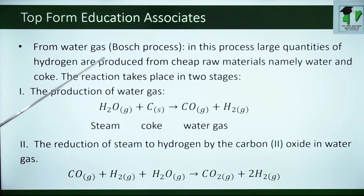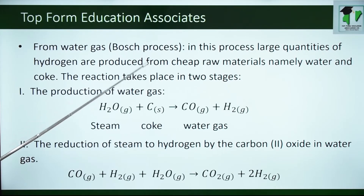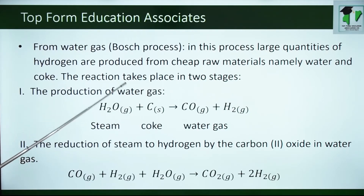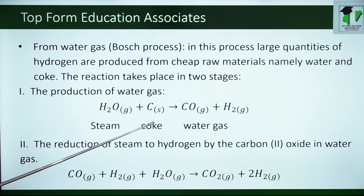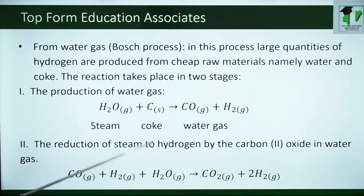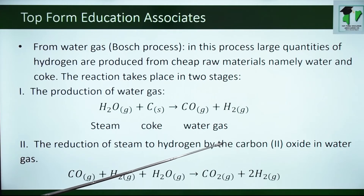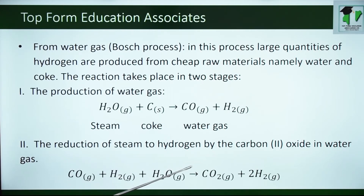You can also prepare hydrogen gas industrially from water gas. This is known as the Bosch process. In this process large quantities of hydrogen are produced from cheap raw materials, namely water and coke. The reaction takes place in two stages. The first is the production of water gas: steam reacting with coke, which is mainly carbon, to give us water gas which is carbon monoxide plus hydrogen gas. The second stage is the reduction of steam to hydrogen by the carbon monoxide in water gas, leaving behind carbon dioxide.